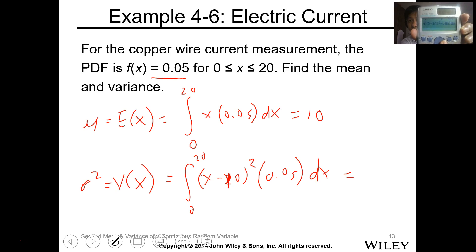So nilagyan ko lang ng parentheses. Then pag in-equal nyo, ito yung sagot, 100 over 3 or 33.32. So this is 33.32. So that is the variance.